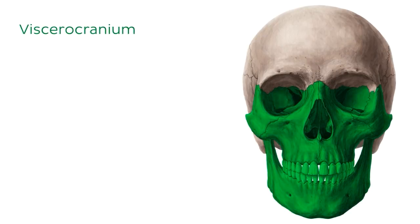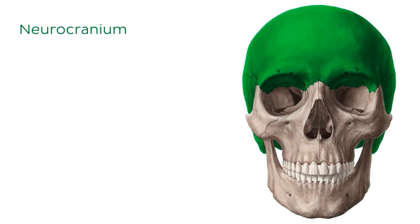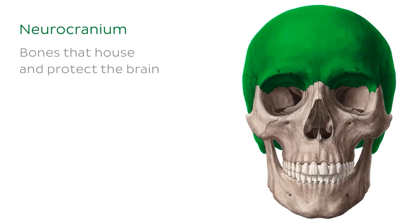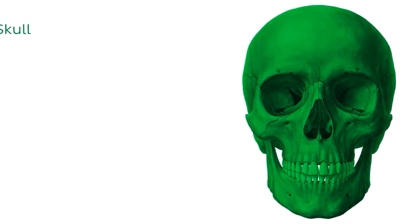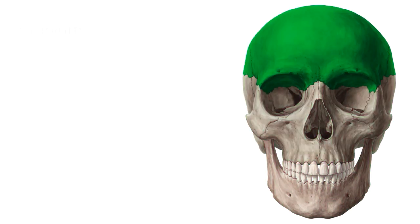The word viscerocranium simply refers to the bones that form the face, and is also sometimes referred to as the splanchnocranium. The neurocranium, on the other hand, refers to the bones that house and protect the brain. Let's also define some differences between terms such as skull, cranium, and calvaria, as they often cause a little bit of confusion. The skull refers to the entire bony framework of the head, including the mandible. The cranium refers to the skull without the mandible. And the calvaria refers to the skull cap, which consists of the upper part of the neurocranium, or the superior portions of the frontal, parietal, and occipital bones.